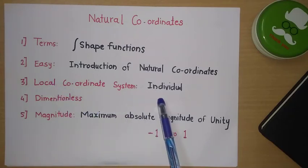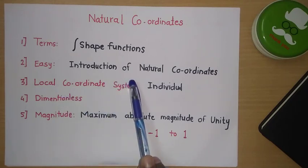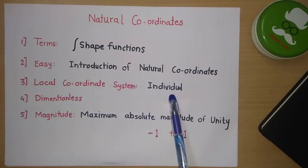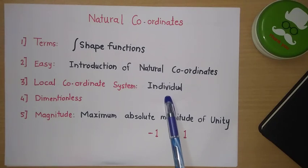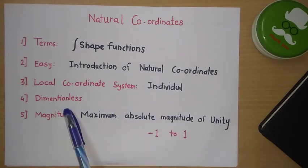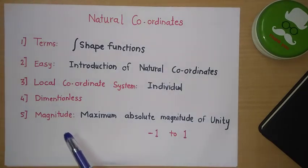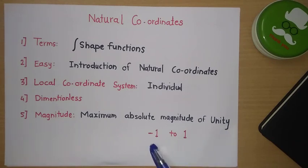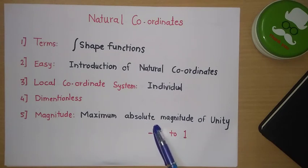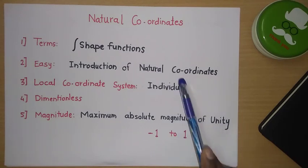Natural coordinates define an individual local coordinate system — for each element we define one natural coordinate system, making calculations for each element easier. Natural coordinates are dimensionless, which is one of the best benefits. Also, the maximum absolute magnitude of this natural coordinate system is unity — it varies from maximum one to minimum minus one.